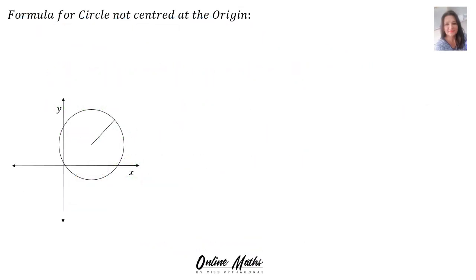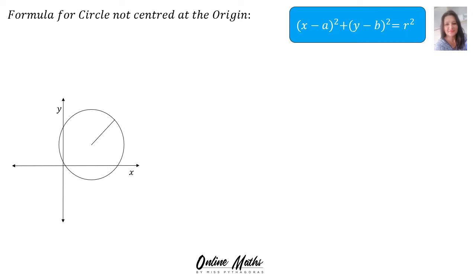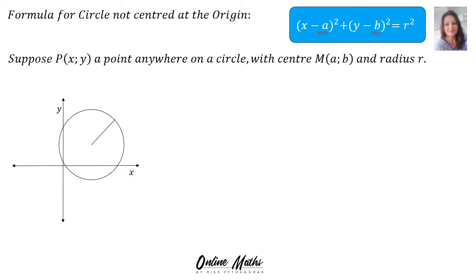The formula for the circle not centered at the origin is: x minus a squared plus y minus b squared is equal to r squared. The values a and b are the coordinates of the midpoint. Now let me show you where the formula comes from.